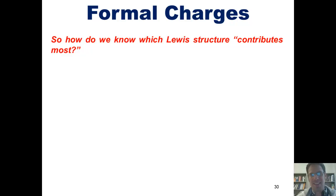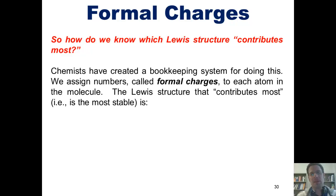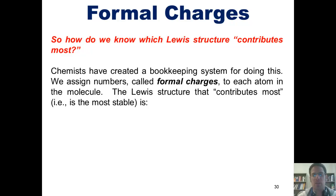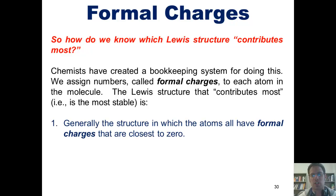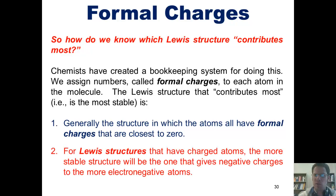So how do we know which Lewis structure contributes more, or is the most stable? Chemists have created a bookkeeping system for doing this. We assign numbers called formal charges to each atom in the molecule. The Lewis structure that contributes most — that is, the most stable — is generally the structure in which all of the atoms have formal charges closest to zero.